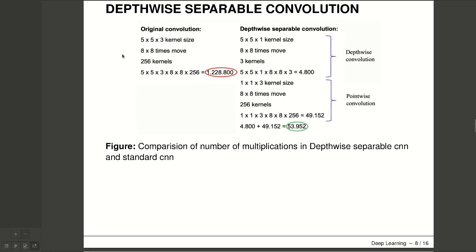Going deeper with more kernels, for example using 256 kernels and a larger configuration, the standard CNN requires 1,228,800 multiplications, but the depth-wise separable convolution requires only about 53,000 multiplications.